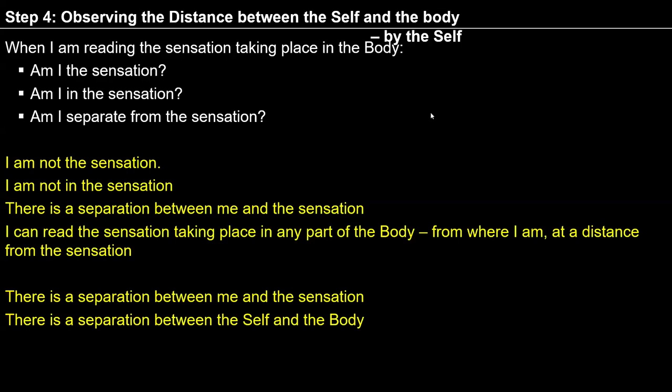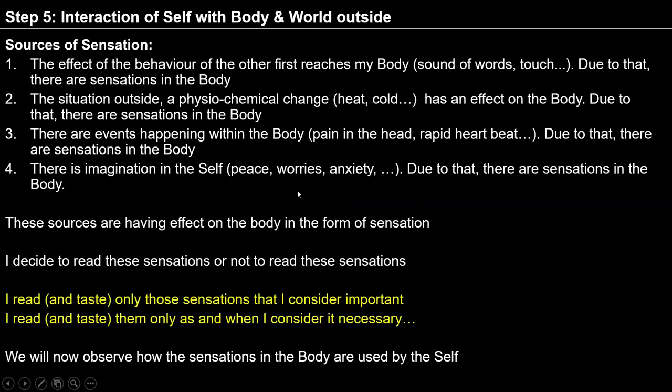I interact with the body as and when I require, not all the time, and body acts according to the instruction that I give it. So in step 3, I am able to see that I am the decision maker, not the body. I am seer, I am doer, I am enjoyer, I am observer — because I have the potential to observe myself, my activity, the whole existence. Once I observe, I decide what to do — in that sense I am doer. Once I decide, I feel happiness or unhappiness of those decisions — in that sense I am enjoyer. So in step 3, I am observer, doer, experiencer, and body is just my instrument.